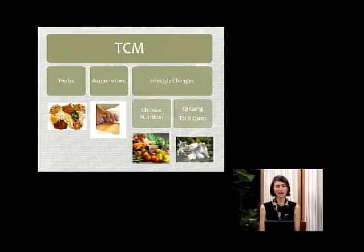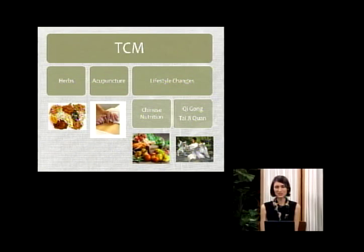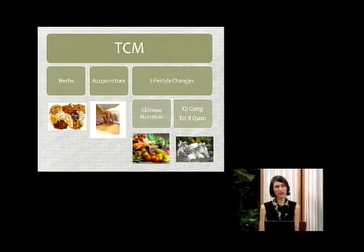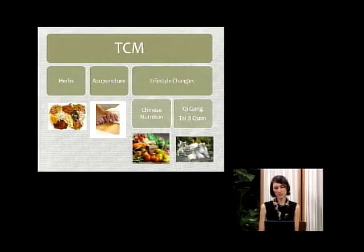Chinese nutrition goes hand in hand with herbal medicine because some herbs are used in everyday cooking and some foods are classified as herbs. Just as herbs, foods have different thermal properties — for example, a banana is cooling where a mango is damp and hot. They have different flavors — sweet, astringent, bitter, sour — and they also have different qualities such as moistening the lungs and promoting digestion.